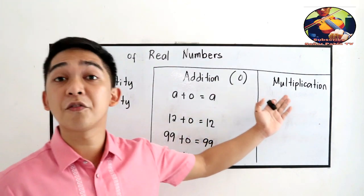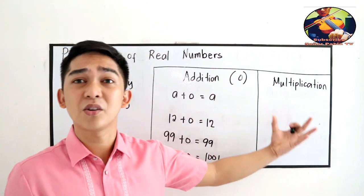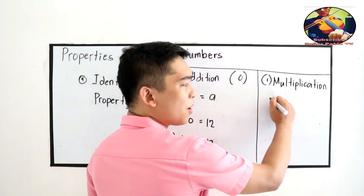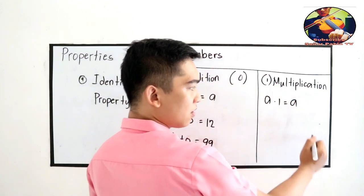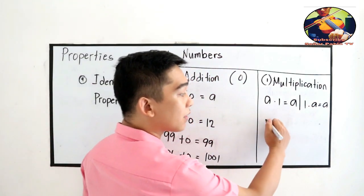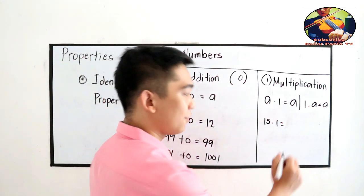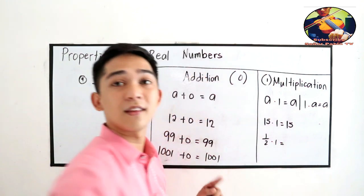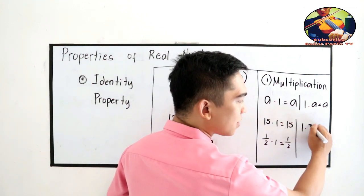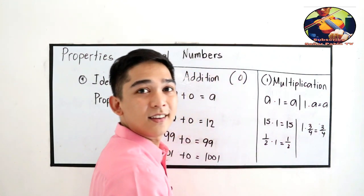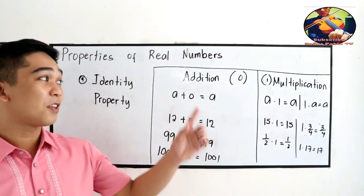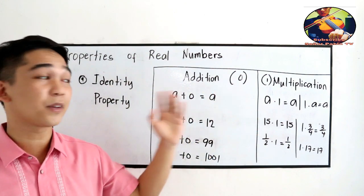For the identity property of multiplication, the identity element is 1. A times 1 equals A, and 1 times A also equals A. For example: 15 times 1 is 15, 1/2 times 1 is still 1/2, 1 times 3/4 is 3/4, and 1 times 17 is 17. Remember: the identity property of addition uses 0, and the identity property of multiplication uses 1.